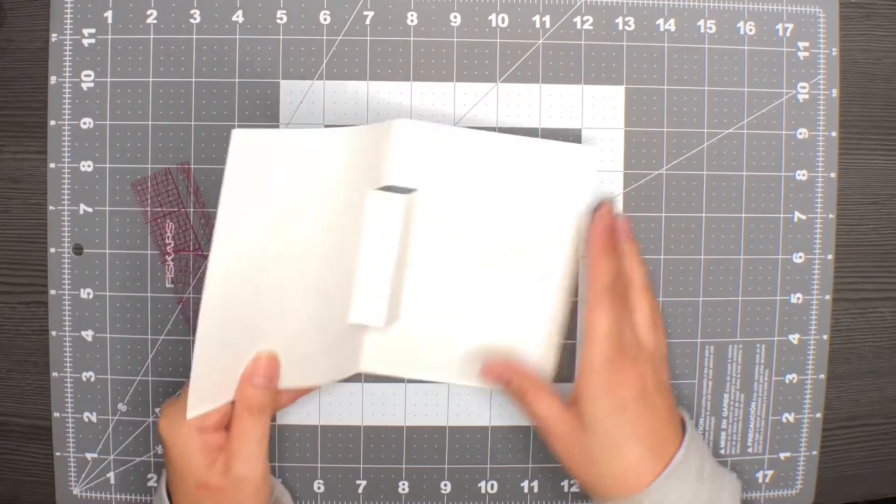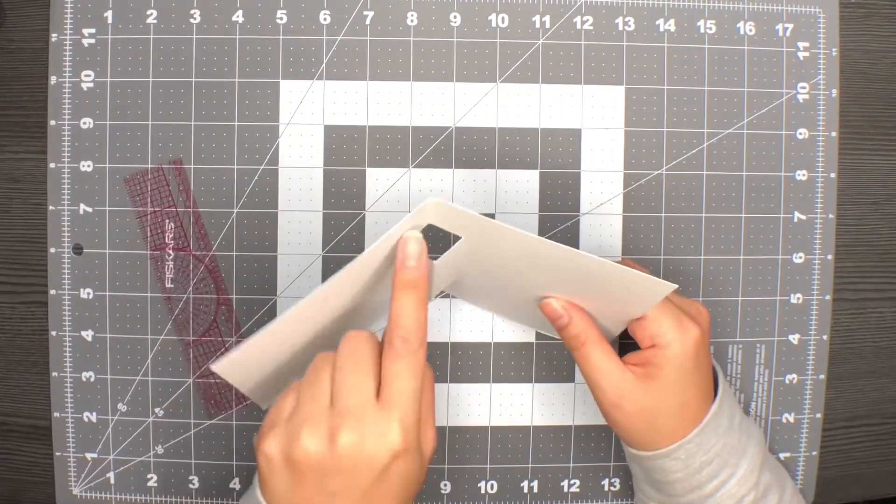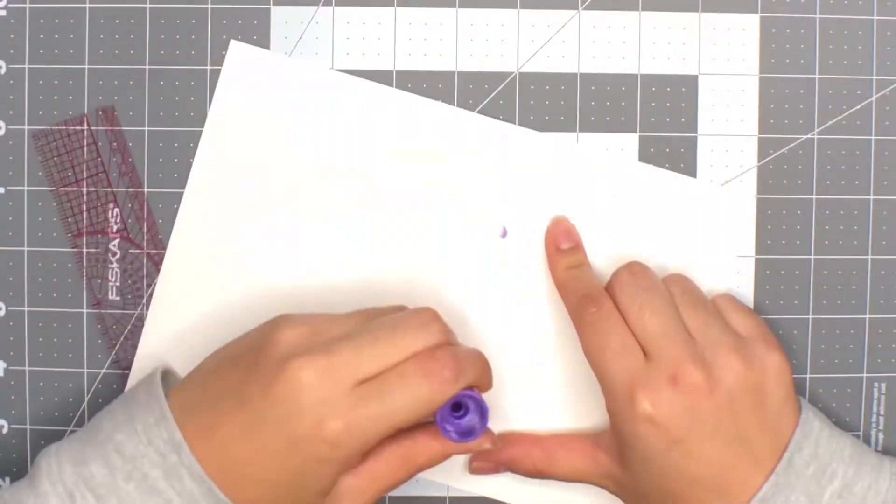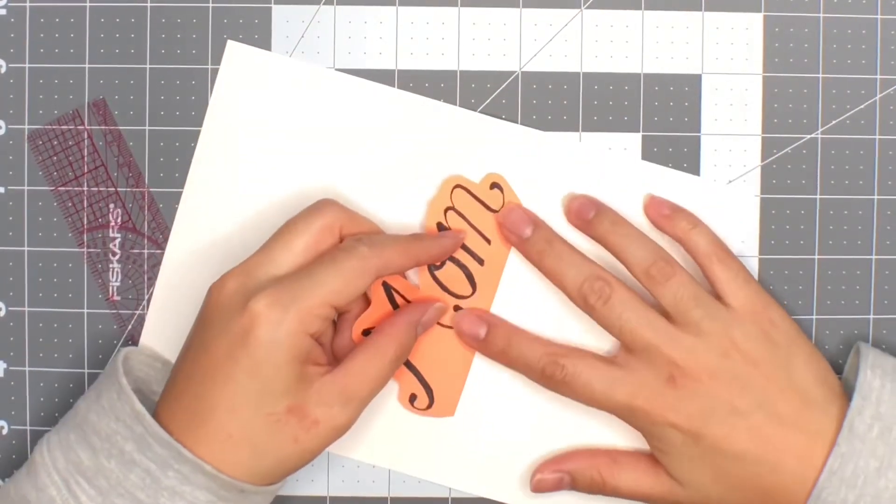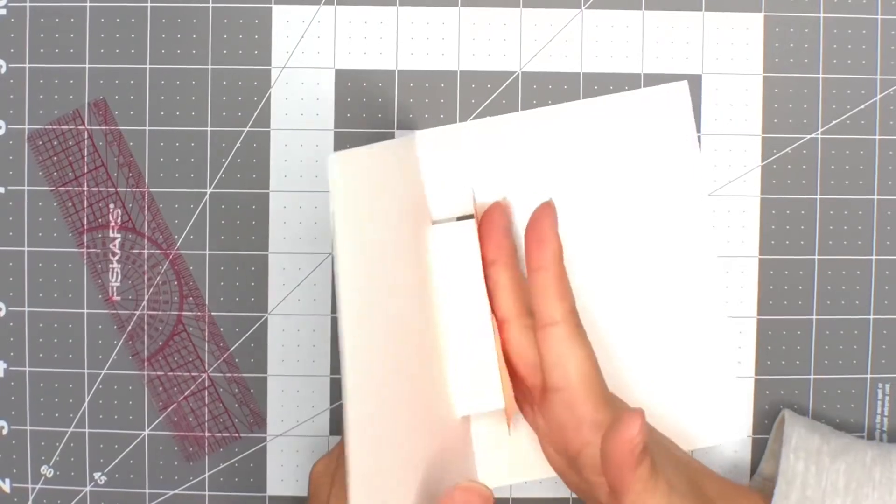And if you look at the card from the side, you'll see that it makes a square. Now for the final step, we will adhere the insert to one side of that middle section.